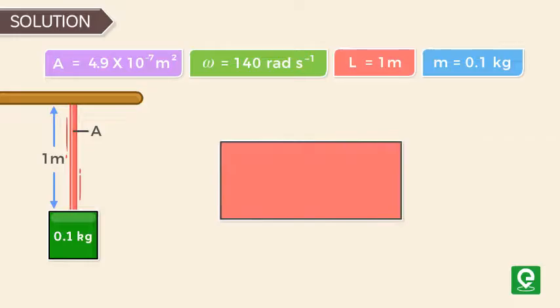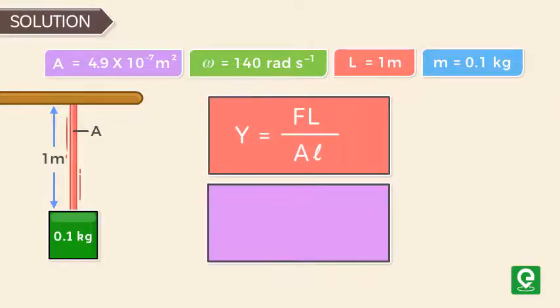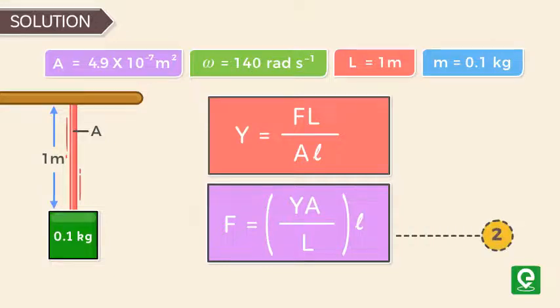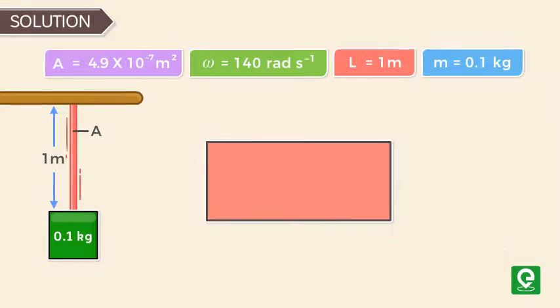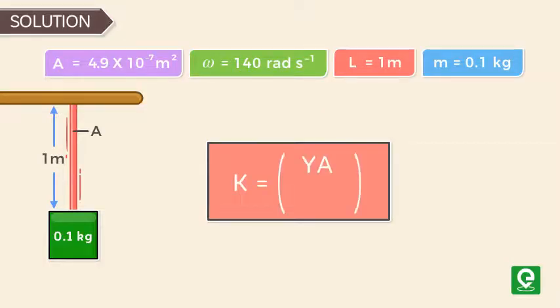As learned earlier, Young's modulus equals force times length divided by area times change in length. This implies force equals Young's modulus times area upon length times change in length. Let's call this equation 2. Comparing equation 1 and 2, we get SHM constant k equals Young's modulus times area divided by length.